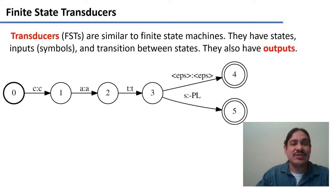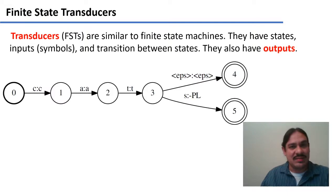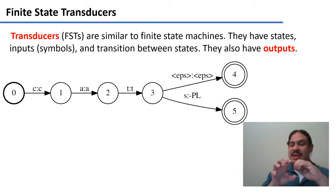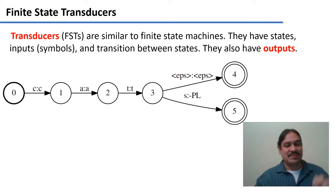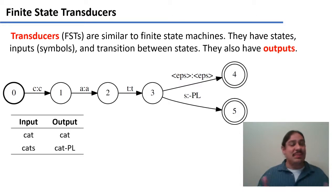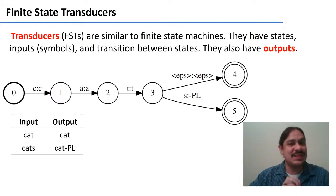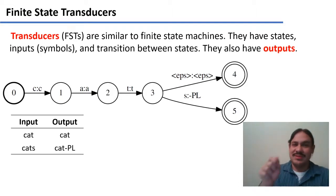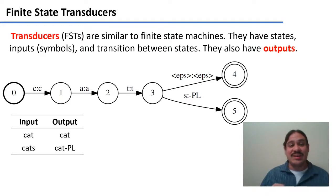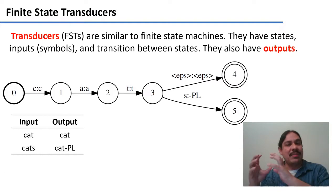A finite state transducer also has outputs. For example, in the transition between 0 and 1, you get the input C and produce the output C. It might look a little bit dumb, but I promise it's worthwhile. This will transform the input "cat" into "cat" — nothing new — but it'll do something really interesting for the plural. It will transform the literal word "cats" into a morphological description of the word: "cat plural".